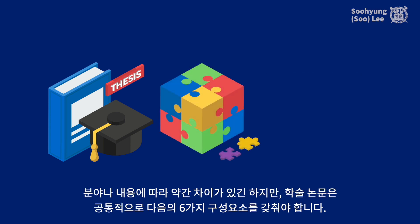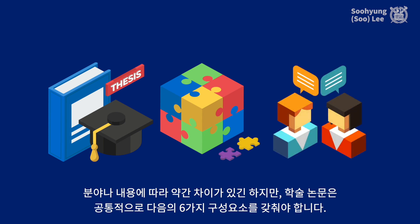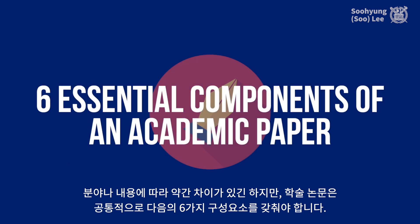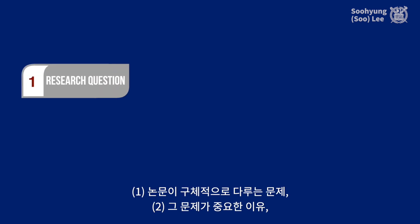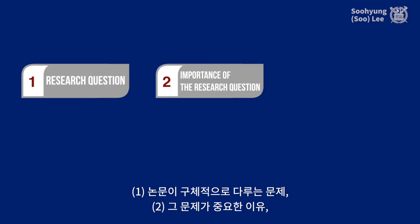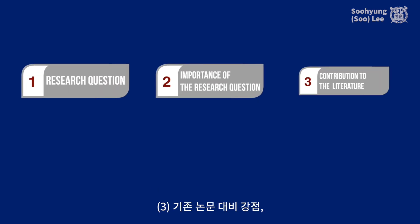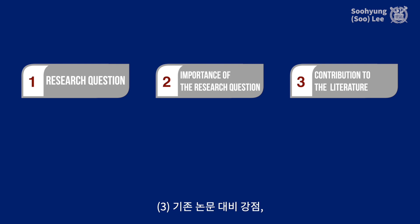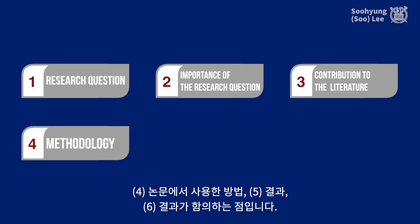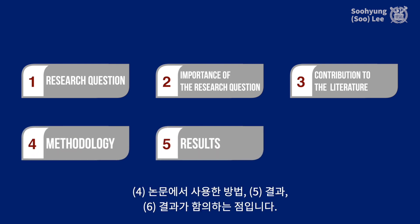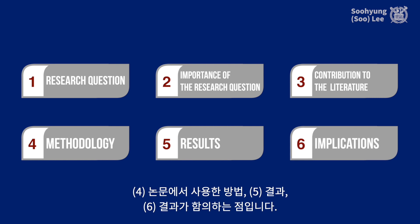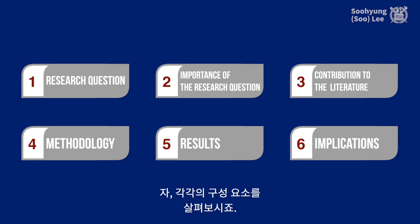Any academic paper should have certain components. The details may differ by the discipline and methodology the paper uses. However, all academic papers should address six components: research questions, importance of that research question, strength of the paper compared to existing studies, methods used in the paper, results, and implications of the findings. Let me explain each component.